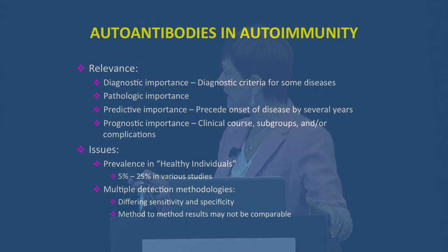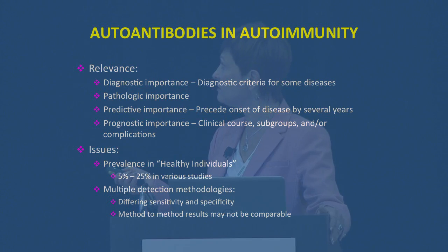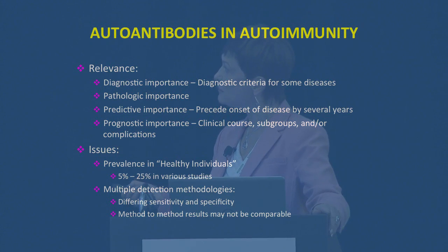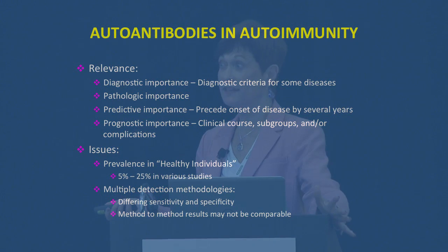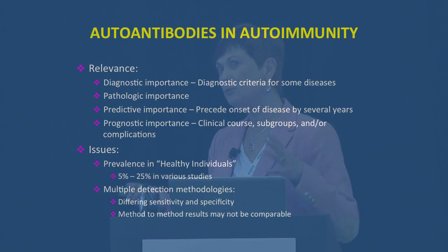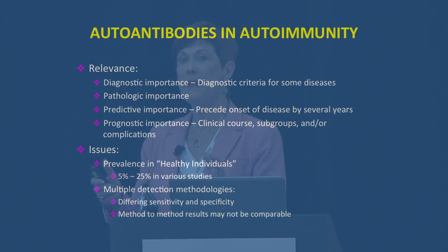One more thing. They can have diagnostic relevance — they can be important in the diagnosis of the disorder. They can have pathologic importance; in other words, they can really be the cause of the symptoms. This one is important: it can be predictive — they can precede the onset of disease by several years, as Dr. Peel mentioned in diabetes. And also they can be prognostic because they can sometimes predict the clinical course of the disease or a specific subgroup that might have more or less symptoms.